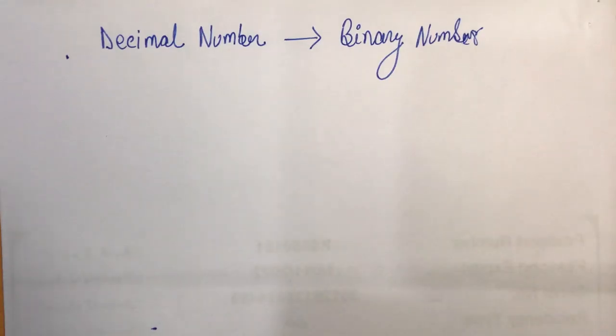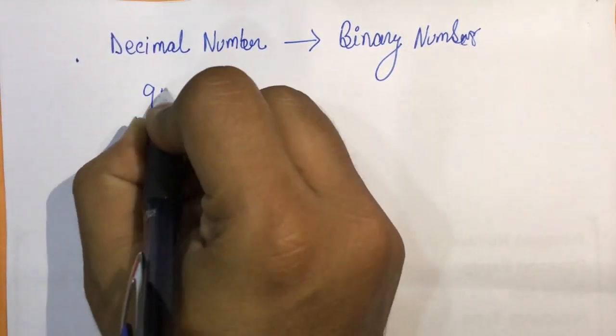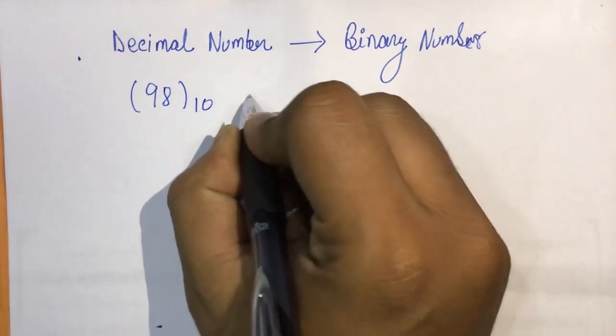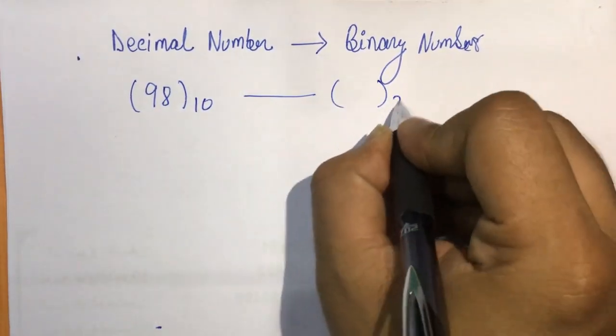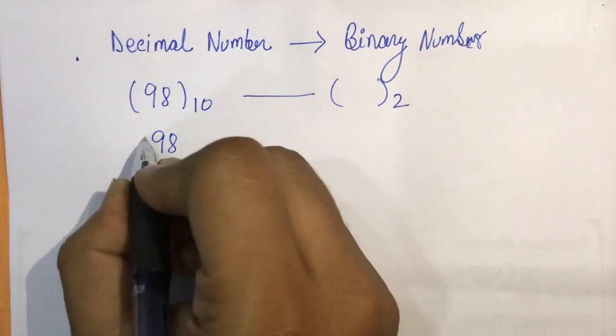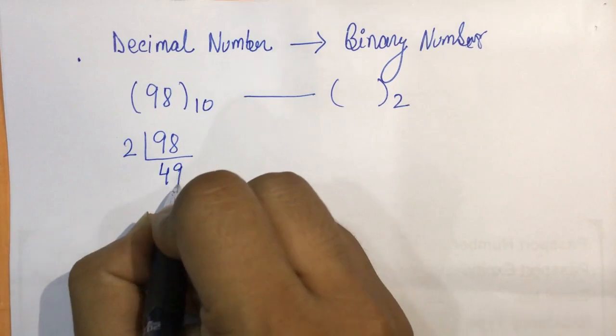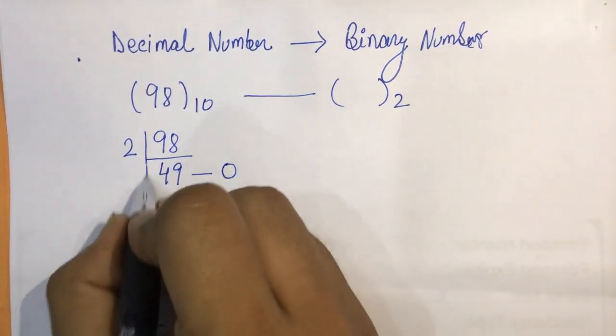Okay, let us take one more example. Suppose there is one more number 98. The base is 10 and we need to convert it to a binary number. So as we know the process, we'll write down the number, we'll divide it by 2. So we get a quotient 49 and then we get a remainder as 0. Again, if we divide the same thing, we'll get 24 with a remainder 1.